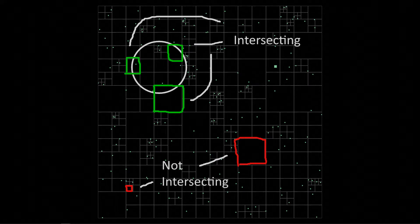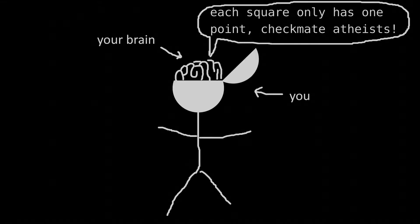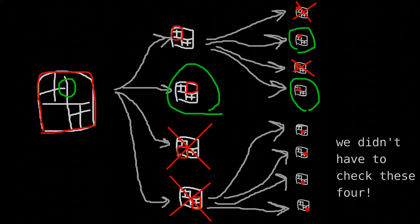Now for the circle. The key thing here is figuring out which squares intersect the circle. We can safely discard those which do not intersect the circle, because any point in a non-intersecting square cannot be in the circle. Some of you may wonder why this would speed anything up, because each square only has a single point. Fortunately, by virtue of the tree-like structure of the quadtree, we can begin by checking the larger squares first, eliminating several points at once.